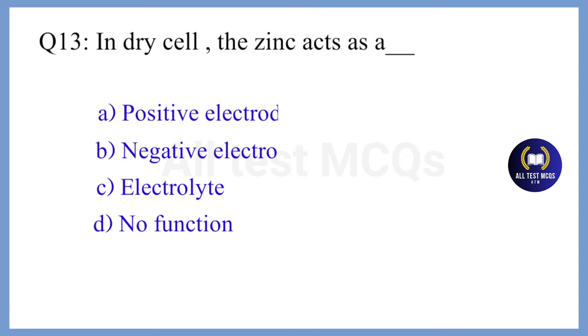Question 13. In a dry cell, the zinc acts as — the correct answer is Option B. Negative electrode.